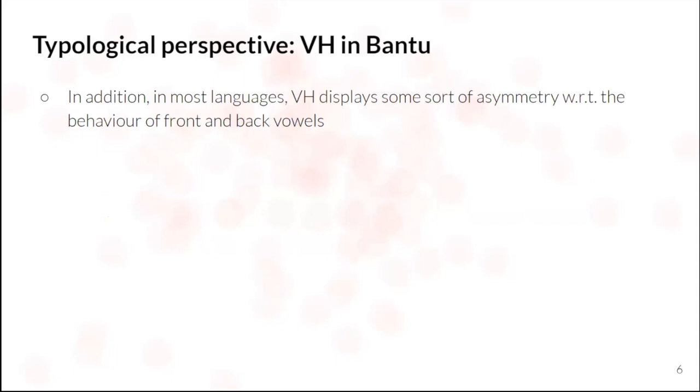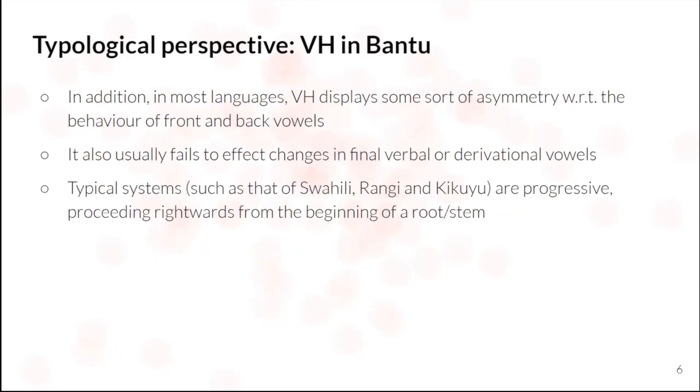Now, in addition to this generalization, we also very commonly get some sort of asymmetry in the behavior of front and back vowels in the system. And harmony typically fails to make any modifications to final verbal or derivational vowels. And typical systems such as that in Swahili, Rangi, Kikuyu are progressive, proceeding rightwards from the beginning of a root.